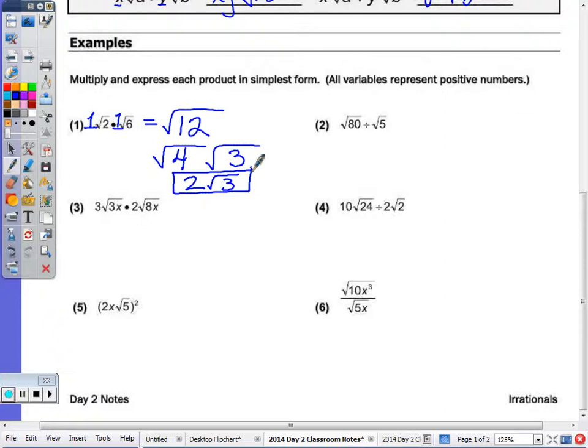And number two, now realize this is the same thing as the square root of 80 over the square root of 5, or it can be written as the square root of 80 over 5. 80 divided by 5 is 16, and the square root of 16 is 4.